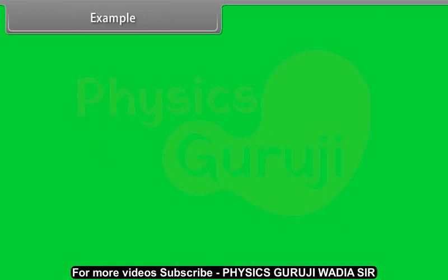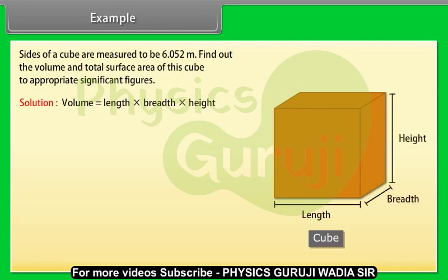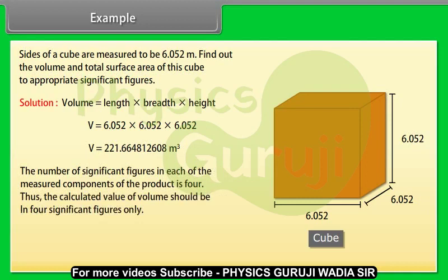Example: Let us take an example of significant figure. Sides of a cube are measured to be 6.052 meter. Find out the volume and total surface area of this cube to appropriate significant figures. Solution: Volume equals length into breadth into height. After calculation we get V equals 221.665 meter cube. The number of significant figures in each of the measured components of the product is 4. Thus the calculated value of volume should be in 4 significant figures only. Thus V equals 221.7 meter cube.